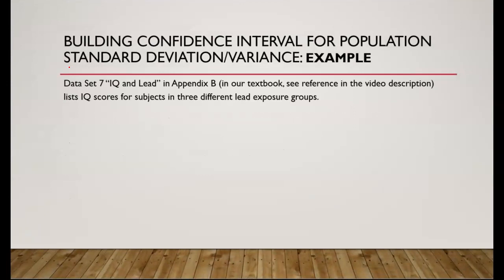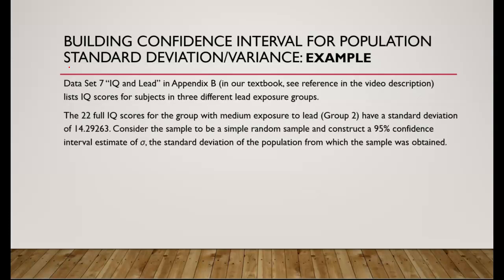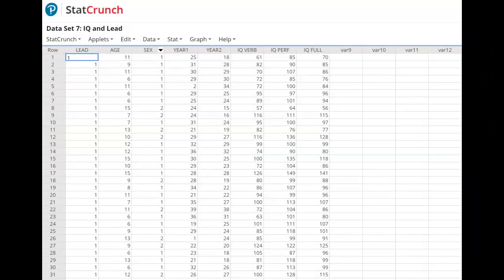Let's read the example. Dataset 7, called IQ and LEAD, in Appendix B of our textbook lists the IQ scores for subjects in three different lead exposure groups. The 22 full IQ scores for the group with medium exposure to lead, group 2, have a standard deviation of 14.29263. Consider the sample to be a simple random sample and construct a 95% confidence interval estimate of the population standard deviation from which the sample was obtained.